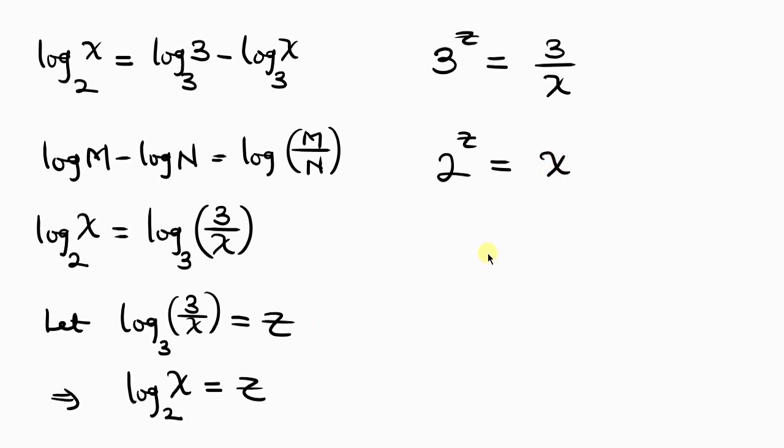So our next step will be for us to multiply the two equations because I can call this equation 1 and I can call this equation 2. So let's multiply. So this is 3 to the z times 2 to the z.